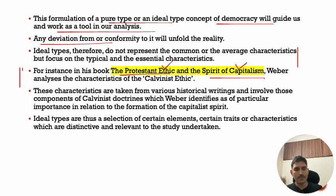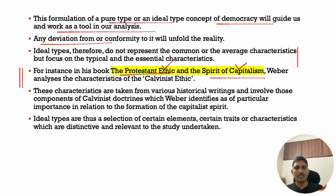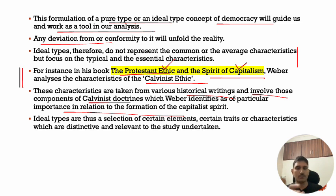Weber used this concept — and UPSC has not asked a question for the past 4-5 years — so next year you might see a question like: how did Weber use the concept of ideal type in his explanation of Protestant Ethic and Spirit of Capitalism? He chose different characteristics of the Calvinist religion from different historical writings and involved those components of Calvinist doctrine which Weber identified as of particular importance in relation to the formation of the capitalist spirit.